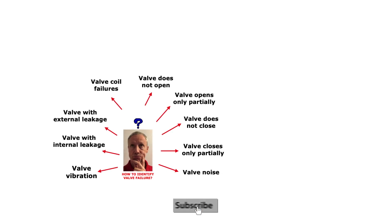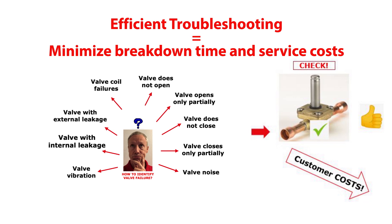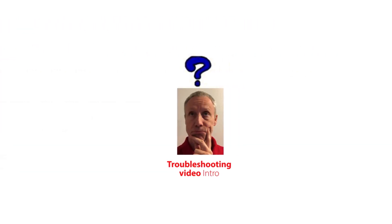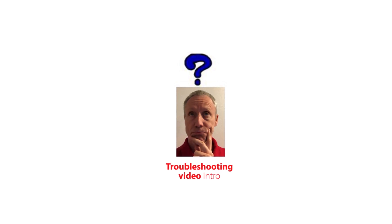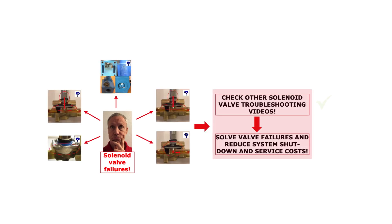Completing this series of online troubleshooting videos will efficiently support you to solve solenoid valve failures and thereby minimize system shutdown and service costs. This video gives you troubleshooting tips so you can efficiently identify root causes and make corrective actions related to a solenoid valve with external leakage. Check out the other online solenoid valve troubleshooting videos to get information about other valve failures and how to solve them.